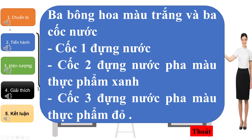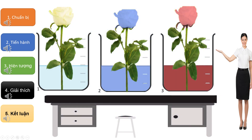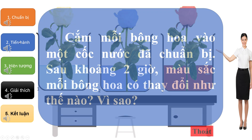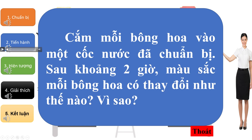3 bông hoa màu trắng và 3 cốc nước: cốc 1 đựng nước, cốc 2 đựng nước pha màu thực phẩm xanh, cốc 3 đựng nước pha màu thực phẩm đỏ. Cắm mỗi bông hoa vào 1 cốc nước đã chuẩn bị.